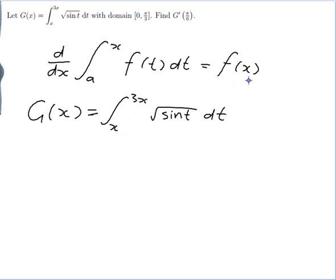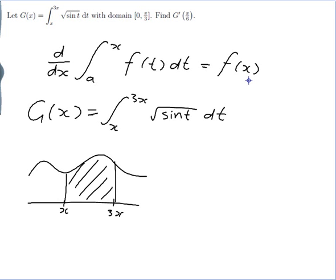Alright, well let me just draw a quick diagram of a general function and see if I can do it. So there's a function and here's x and here's 3x. And my function is the area from x to 3x. Well what I want to write it as is something from a number up to x or a number up to 3x. If I pick 0 which is where my domain started over here,